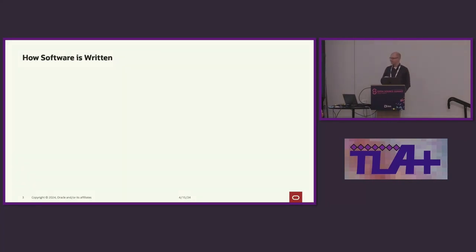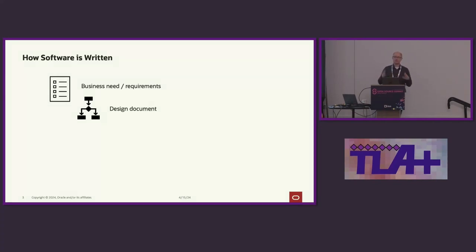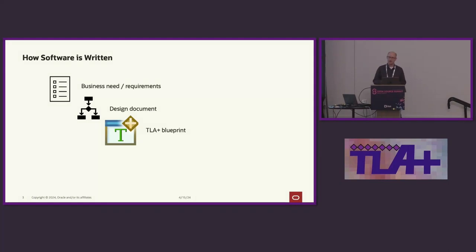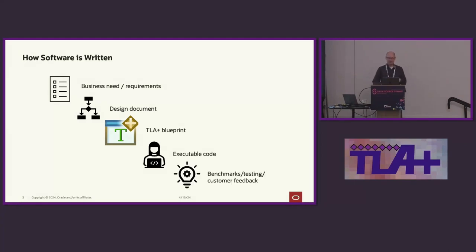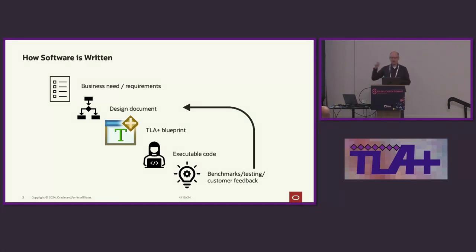Let me show you one good way to write software. You start with your business requirements — some need that your customers have. You come up with a design document saying what you need to build to meet those requirements. You write some TLA+ as a blueprint of your design documents, make your ideas formal, make sure your design will fit those requirements and satisfy all properties you need. Then take your blueprint, turn it into executable code. And once your code is running and you're gathering benchmarks, testing, customer feedback, circle back to an earlier step — your agile loop — update your design document or requirements and go through the cycle again.